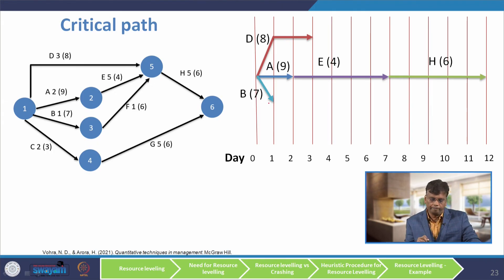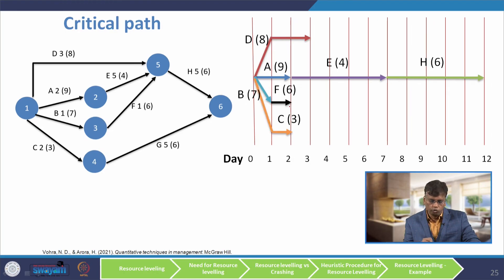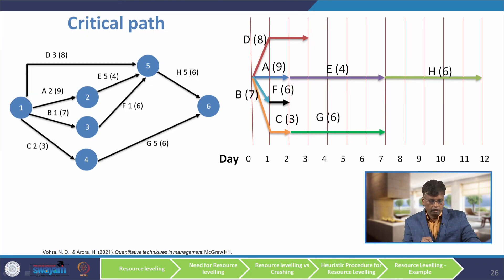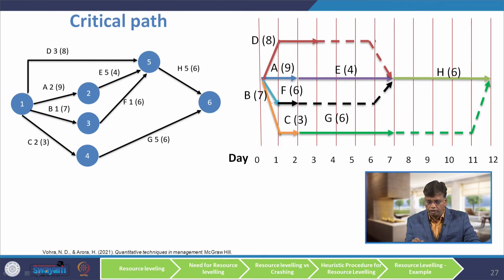Activity C has a duration of 2 days and a manpower requirement of 3. Activity G has a duration of 5 days and a manpower requirement of 6. Activities A, E, and H are the critical activities. Activity D finishes with E — that is why a dotted line is drawn. Activity B has a duration of 1 day, followed by activity F, which also finishes with activity E, hence dotted lines. Similarly, activity C is followed by activity G, which finishes with activity H — that is why the dotted line is drawn. The maximum duration of 12 is derived from the critical path.